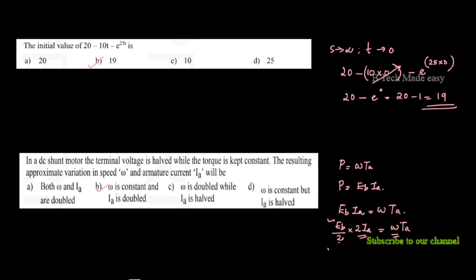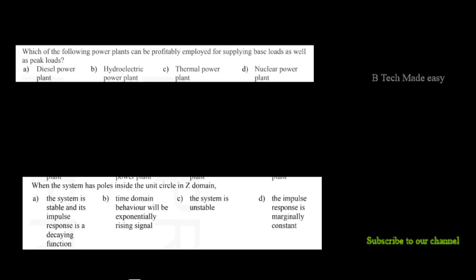So omega is constant and Ia is doubled. Next question: which of the following power plants can be profitably employed for supplying both base load and peak load? The answer is a hydroelectric plant. This is an important question.